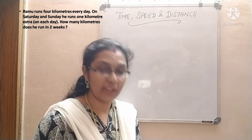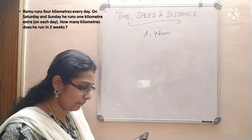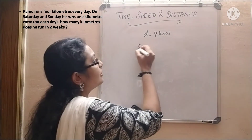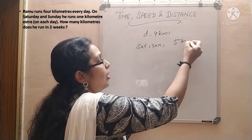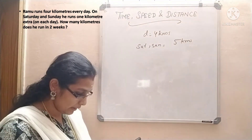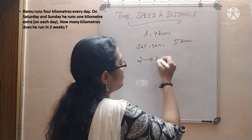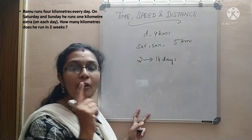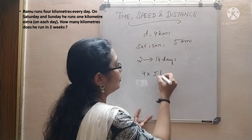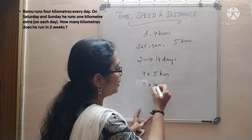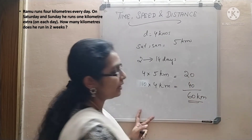Next question. Ramu runs 4 kilometers every day. On Saturday and Sunday he runs 1 kilometer extra on each day — so 5 kilometers each on Saturday and Sunday. How many kilometers does he run in 2 weeks? 2 weeks = 14 days. In 2 weeks there are 2 Saturdays and 2 Sundays, totaling 4 weekend days. On those 4 days he runs 5 km each: 4 × 5 = 20 km. On the remaining 10 days he runs 4 km: 10 × 4 = 40 km. Total = 20 + 40 = 60 kilometers.